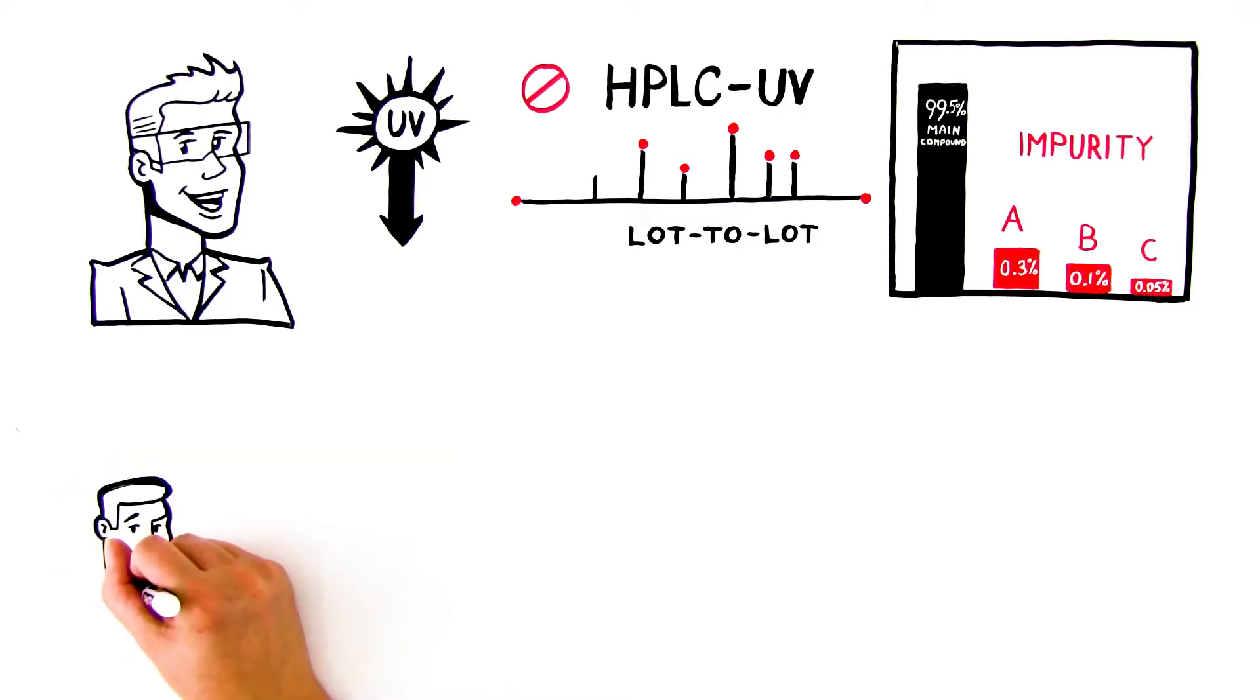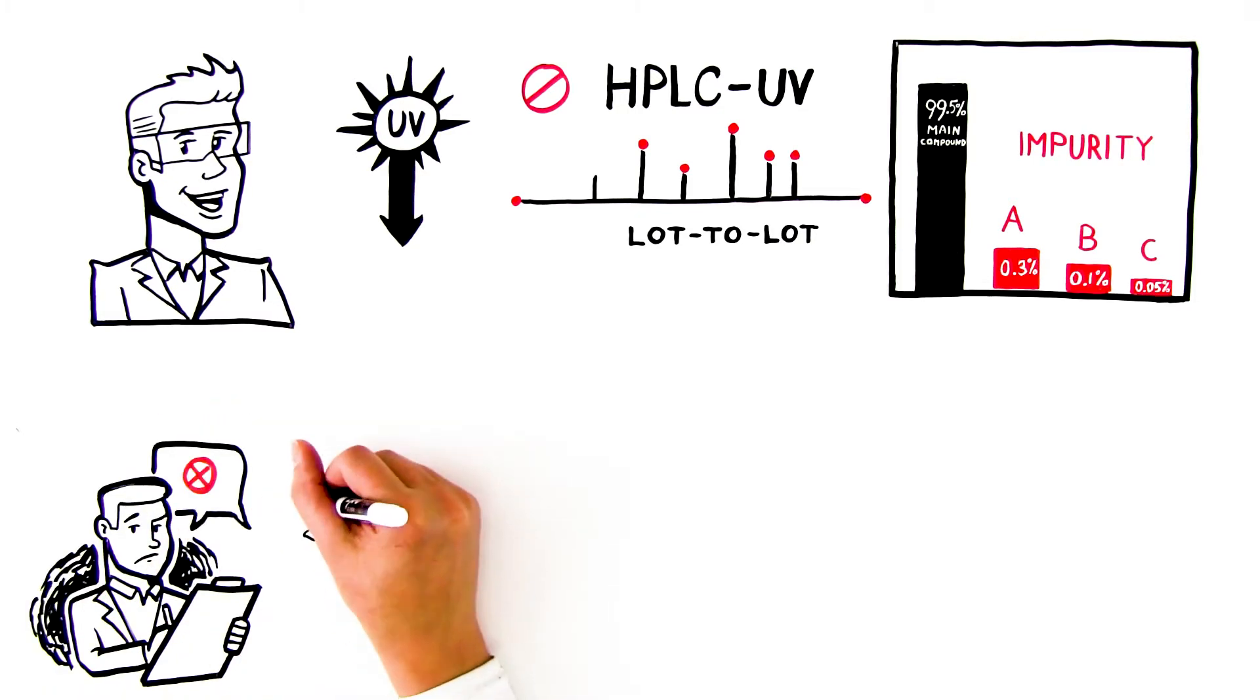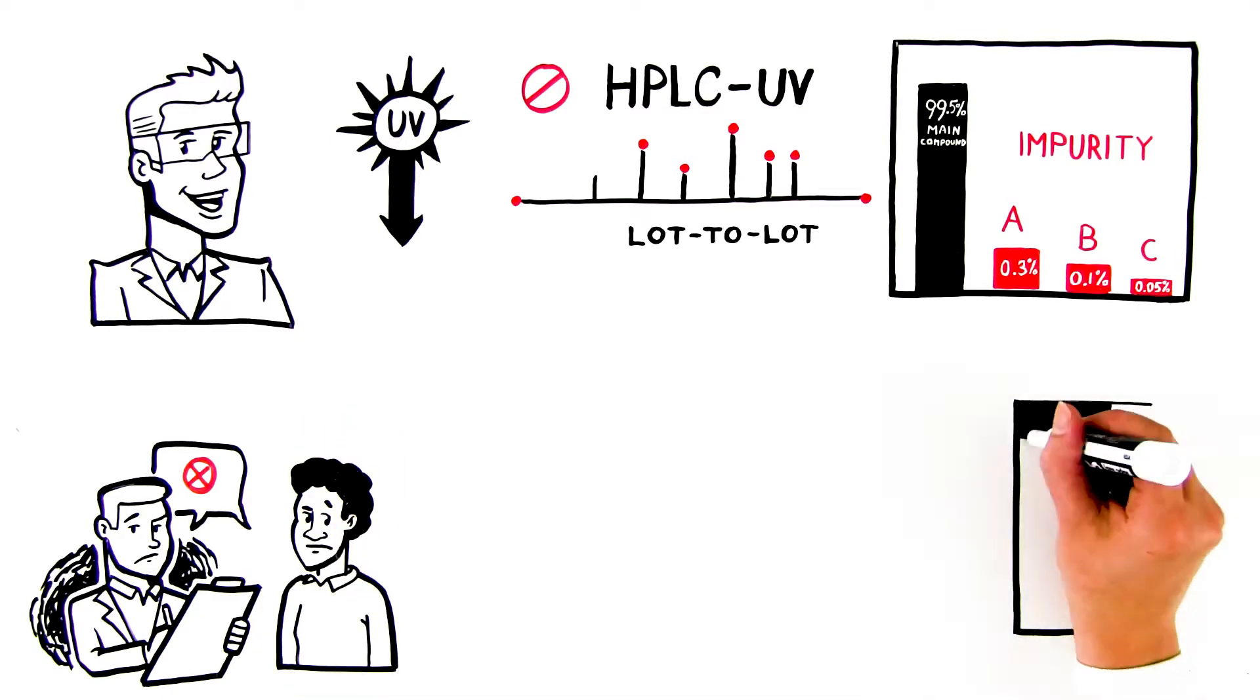If your LC method cannot reliably detect every chemical, impurity, or degradation product in a vaccine, this puts your ability to get federal approval at risk and, even worse, poses a potential danger to patients.